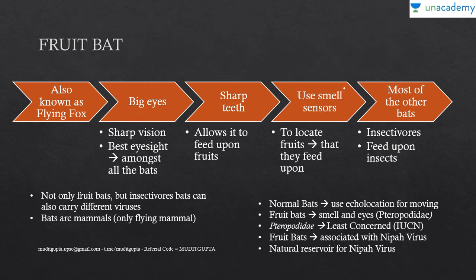If we talk about the fruit bat's scientific name, it is Pteropodidae. This is the scientific name of fruit bats. In the IUCN list, they are least concerned, meaning their population is good.